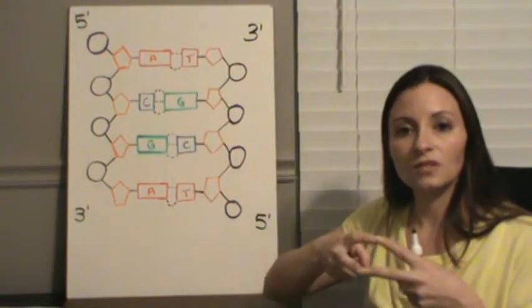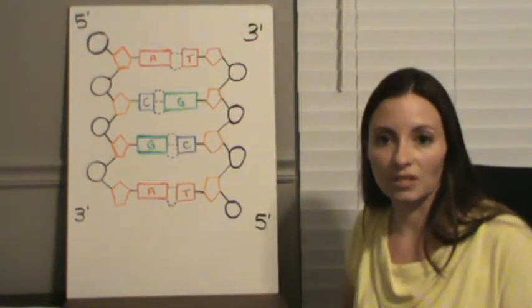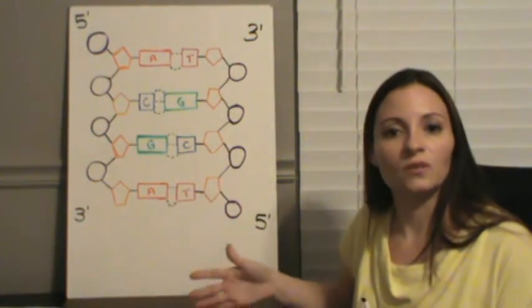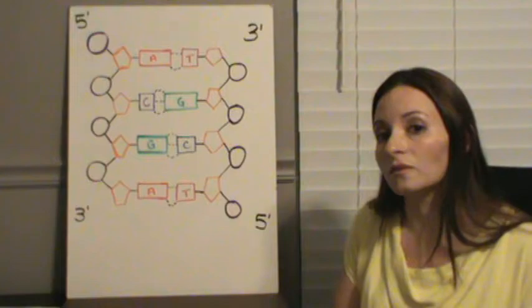And adenine and thymine want to make two, so because of the two, they're only going to pair with each other. Then the question becomes, well, how come guanine won't pair with guanine, and cytosine won't pair with cytosine?